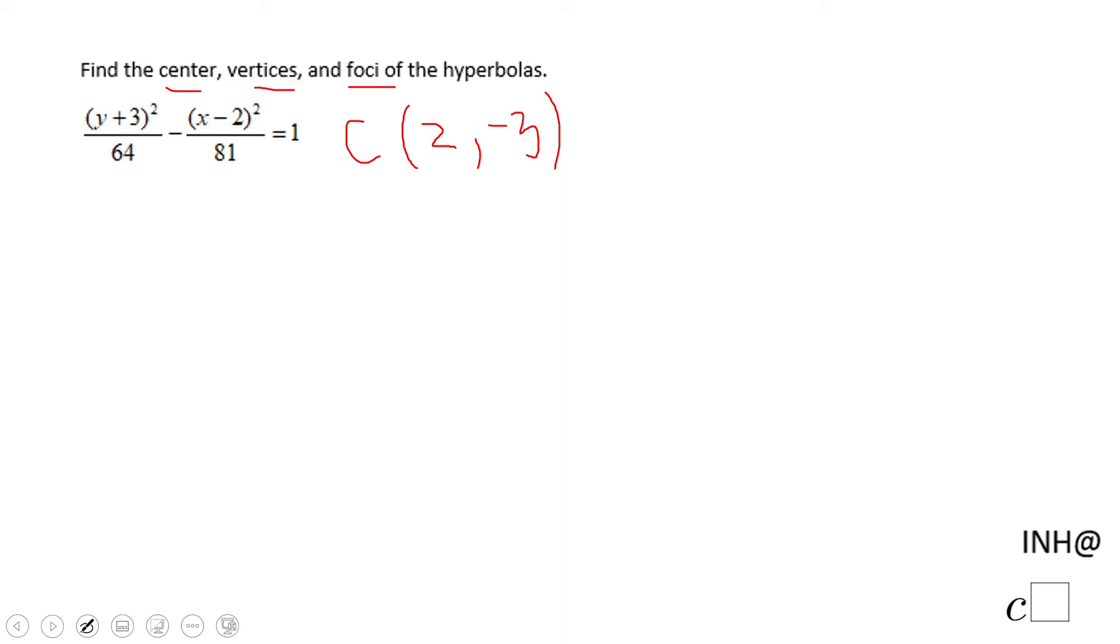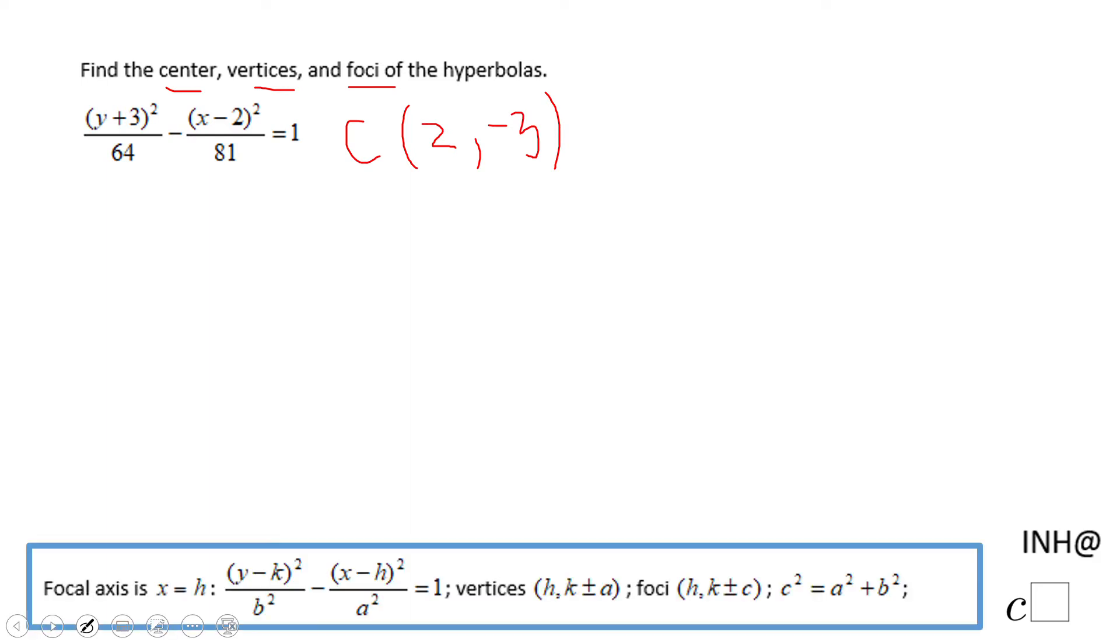For finding the vertices, first we need to define the focal axis, which in our case will be x equals h, x equals 2, because the equation is in this form: y squared minus x squared.